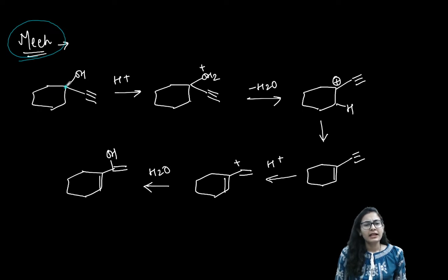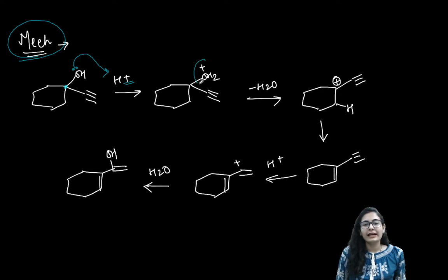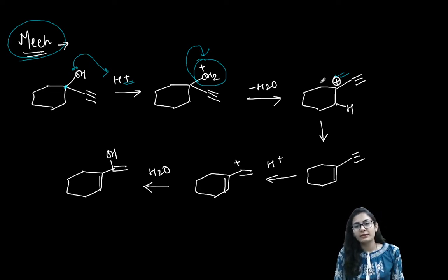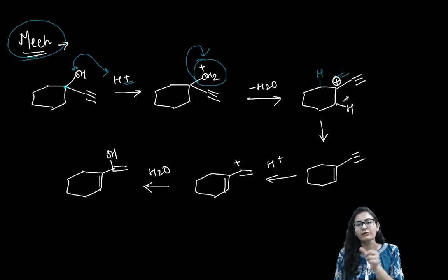Now, the mechanism: we have the acetylinic group and the alcohol on the same carbon. In the presence of a proton, hydronium ion formation takes place. Water is a good leaving group, and when it leaves you get the carbocation. Now since the carbocation doesn't have any other major possibility, the removal of a proton gives you the alkene.